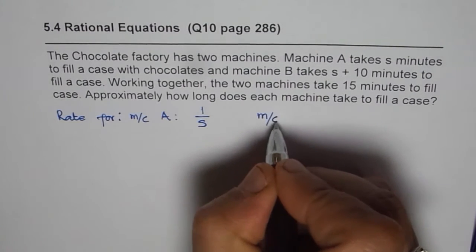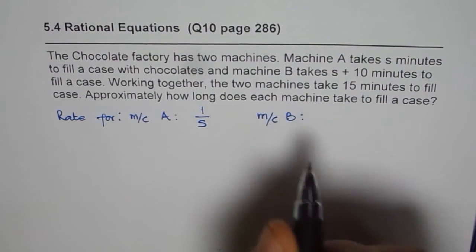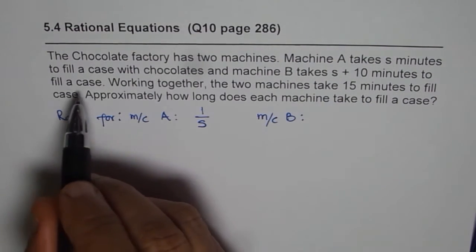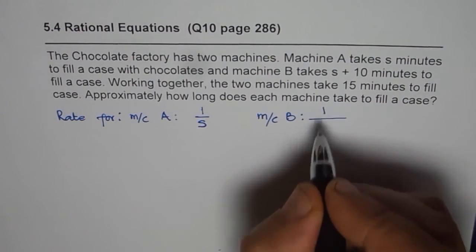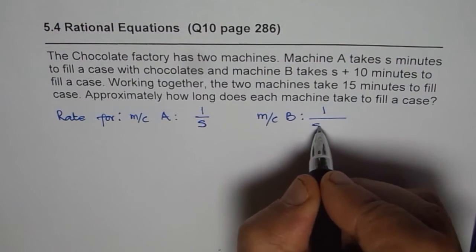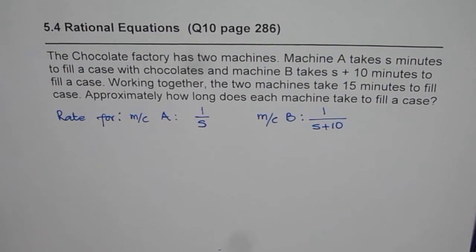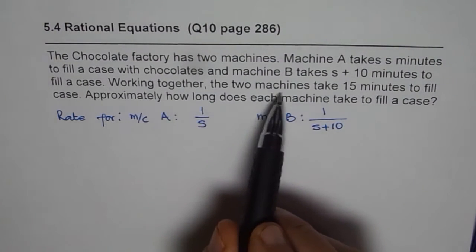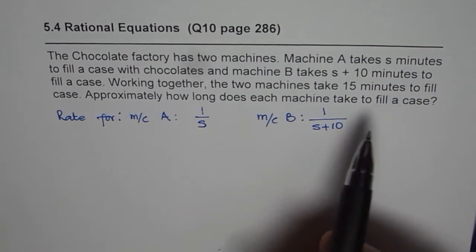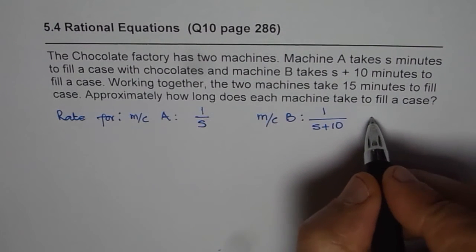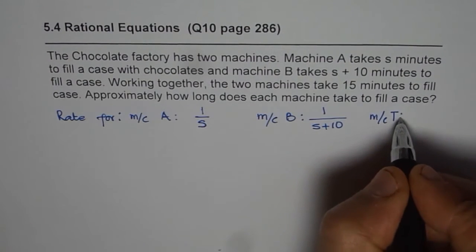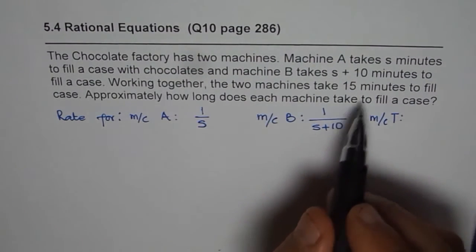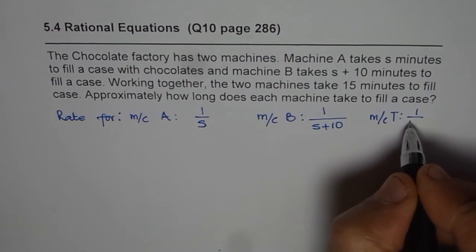And for machine B it is how much? Machine B takes s plus 10 minutes to fill a case. So it is again one case and time taken is s plus 10 minutes. The third case is working together the two machines take 15 minutes. So the rate for together, let us say machine T, working together the whole case is filled in 15 minutes. So it is 1 over 15.